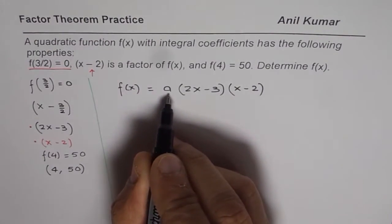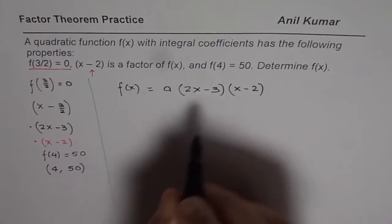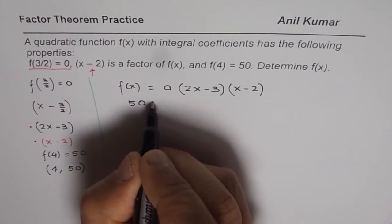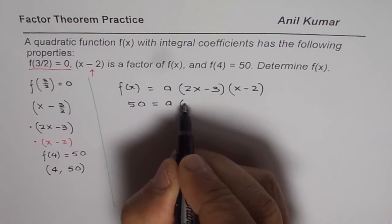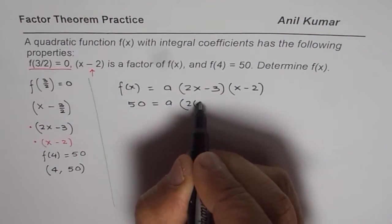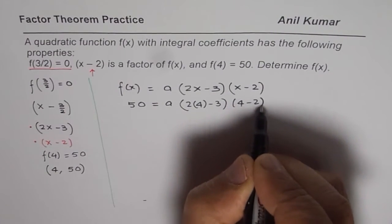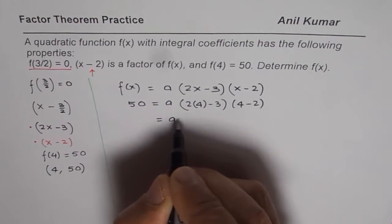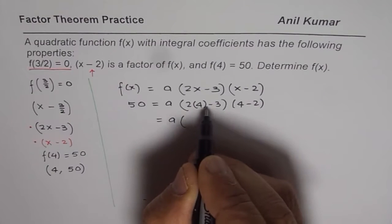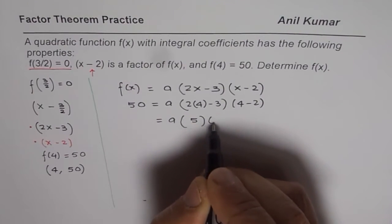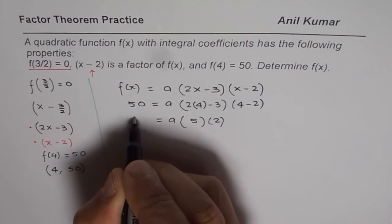To find the value of a, we will use the given point f(4) equals 50. That means 50 is the value of this function when x is 4. So 2 times 4 minus 3 times 4 minus 2. That is a, 8 minus 3 is 5, 4 minus 2 is 2. That is equals to 50.